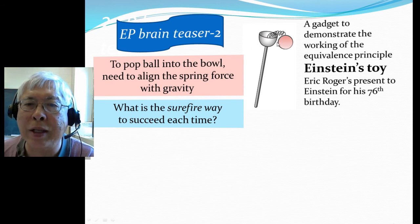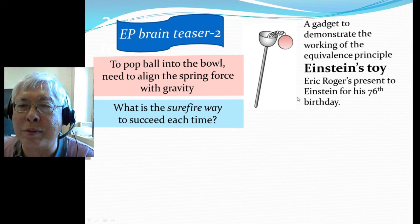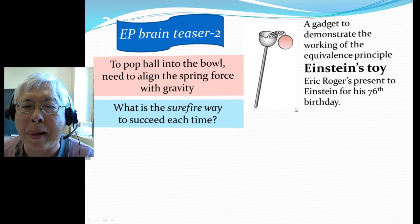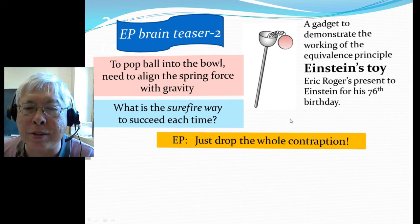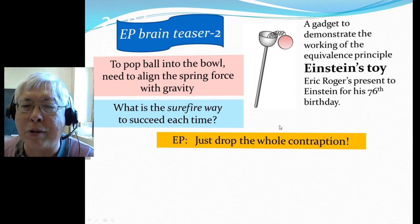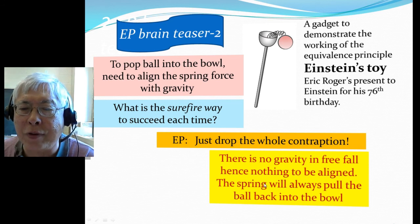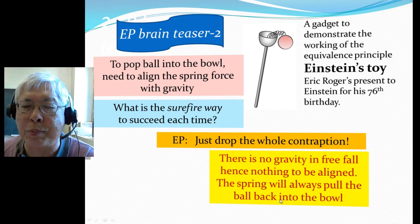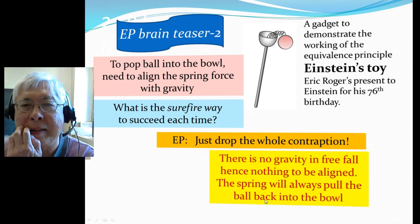Of course, as suggested by the equivalence principle, the thing is: drop the whole contraption. If the thing is in free fall, then there's no gravity. There's no gravity in free fall. You just need to align the spring force, so the spring will always pull the ball back.